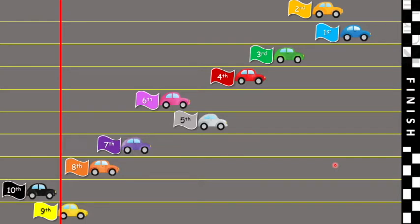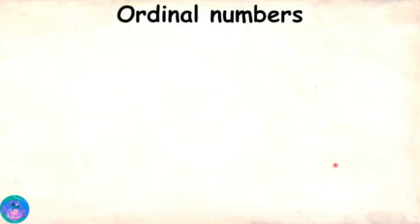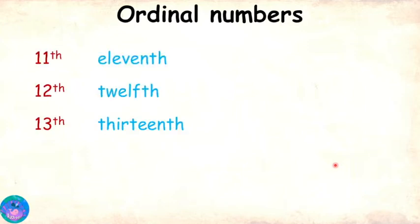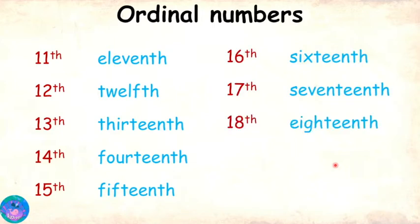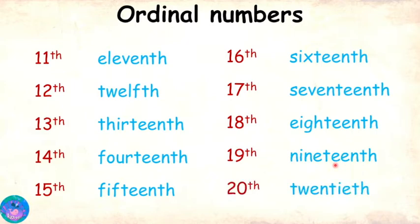Excellent! Now let us see the next ten ordinal numbers. They are 11th, 12th, 13th, 14th, 15th, 16th, 17th, 18th, 19th, and 20th.